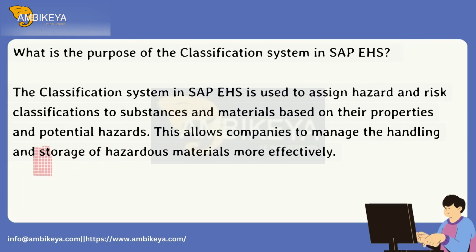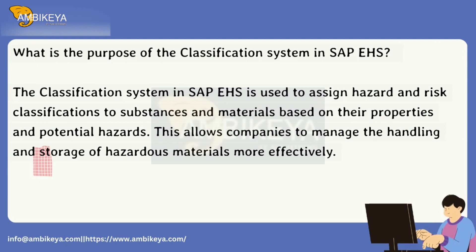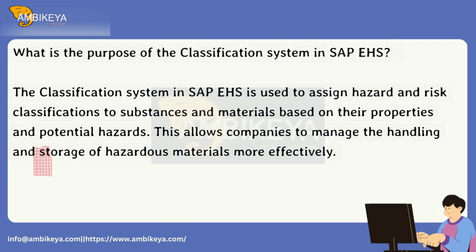What is the purpose of the classification system in SAP EHS? The classification system in SAP EHS is used to assign hazard and risk classifications to substances and materials based on their properties and potential hazards. This allows companies to manage the handling and storage of hazardous materials more effectively.